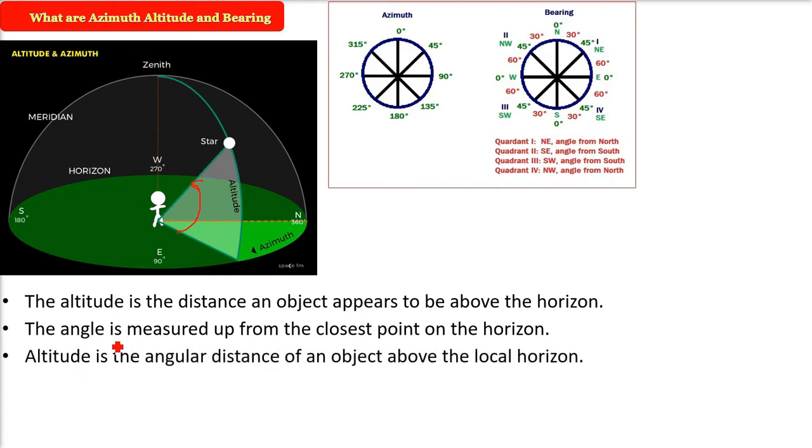Altitude is the angular distance of an object above the local horizon. We also call it elevation or altitude. There are two angles in order to actually see something. Azimuth - move to that direction, look up - that is the altitude.